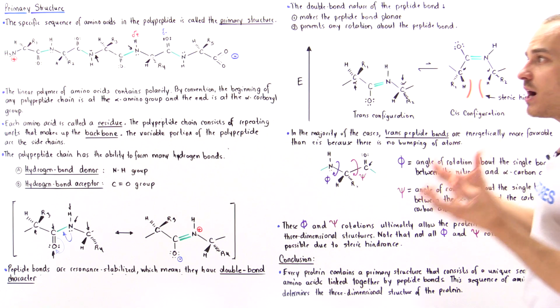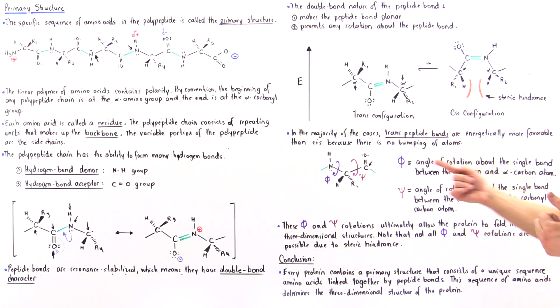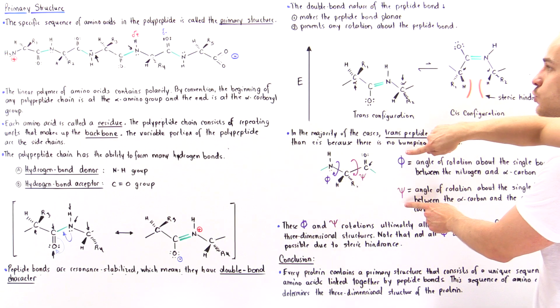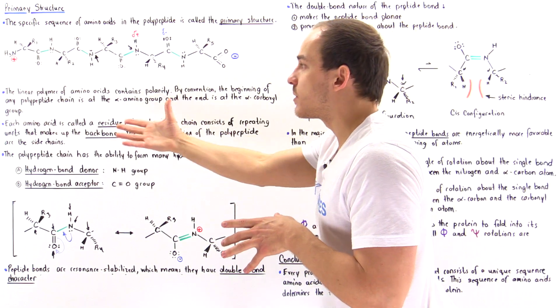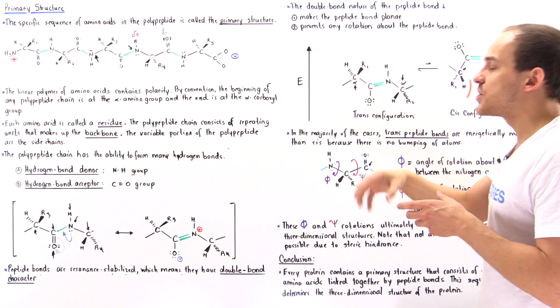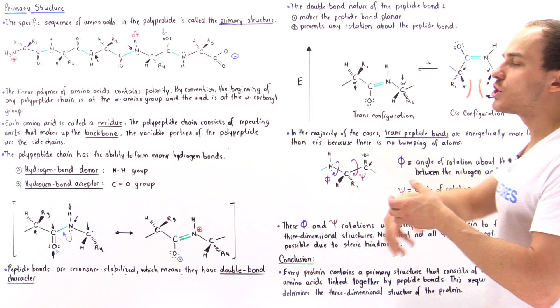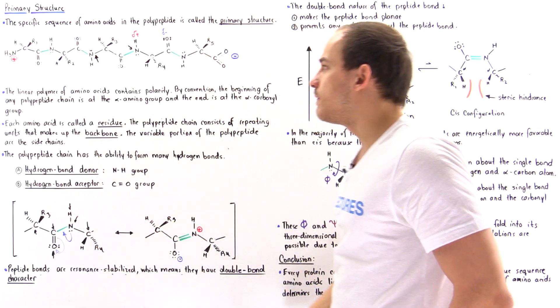And that's actually a good thing because what that means is if there are a limited number of ways that our rotations of these two torsion angles can actually take place, that means the polymer, the linear polymer of amino acids, has to go through fewer rotations to eventually end up with that final three-dimensional structure of our protein.